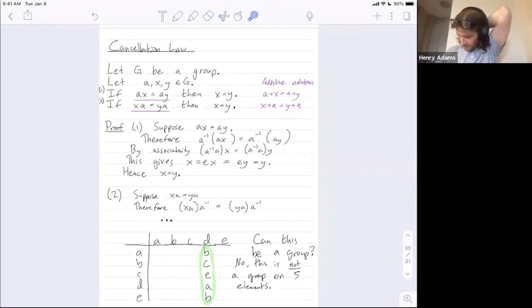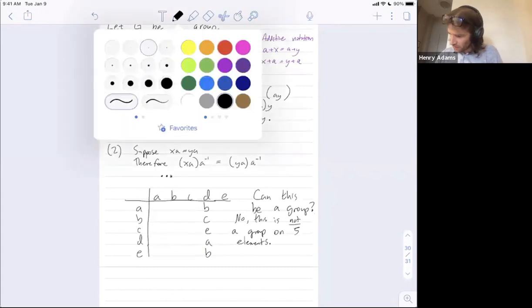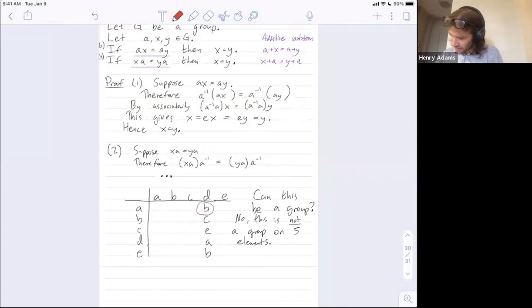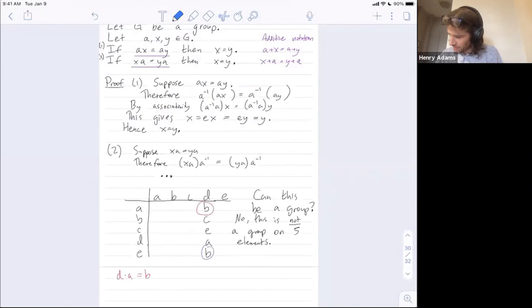Because what I have is, let me write this in colors. Right here, this is saying that d times a is equal to b. And in blue, this is saying that d times e is equal to b. I told you that d times a is equal to b. So let's keep going.